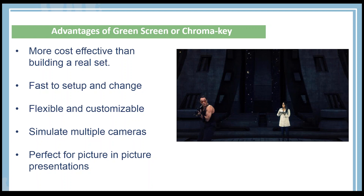It allows you to simulate multiple cameras. Basically, what this means is most of our virtual sets come with a whole bunch of different angles, so you can actually make it look like the cameras are moving positions when editing — it's really just the virtual set at a slightly different angle.